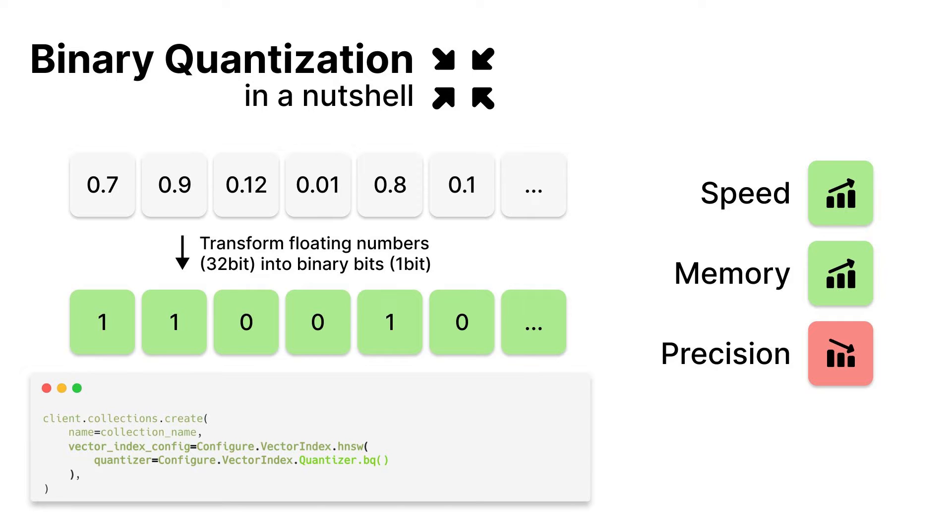After transforming the complex objects, you can determine their similarity by calculating the similarity of the respective embeddings. This is crucial for many use cases.